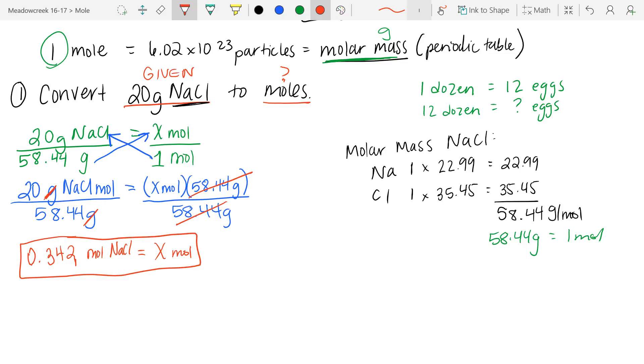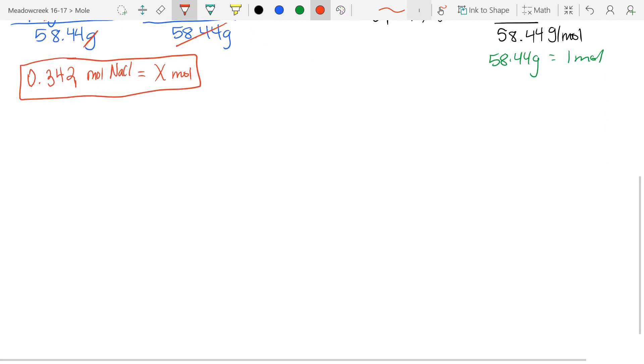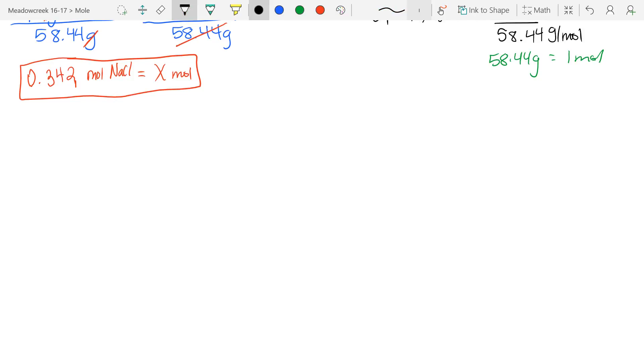And there you have it, your answer. So essentially, all you need to do is set up your fraction, cross multiply, and solve for x. Now, what if we use these number of moles and do something similar but a little bit different? Let's work on a second problem.